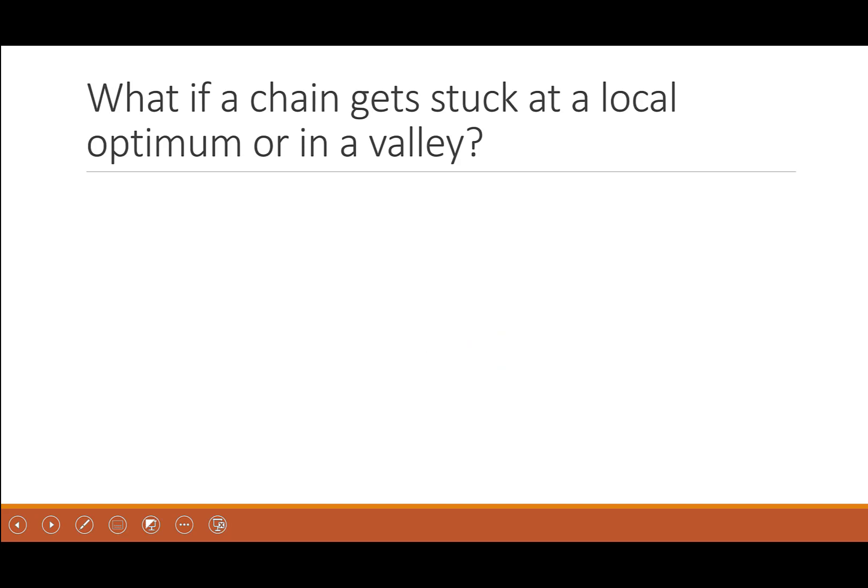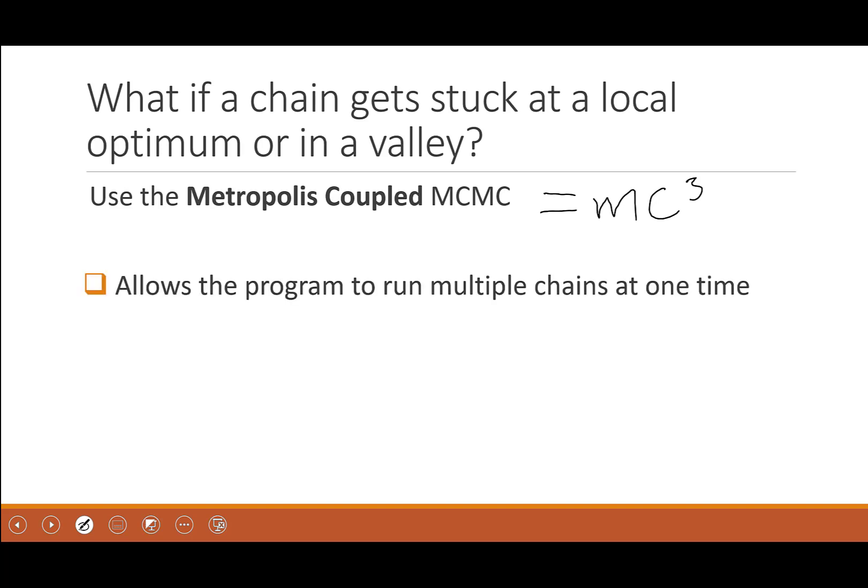So what if a chain gets stuck at a local optimum or in a valley and you can't seem to move up and you can't seem to move down to get to a global optimum? We're going to attempt something new then. And this is called the metropolis coupled MCMC, which is oftentimes called MC cubed. And what this lets you do is it allows the program to run multiple chains at one time. So instead of just running one chain, you can run multiple. But this isn't quite what you might think. The chains themselves are running around or searching for trees in a landscape that looks a little bit different. So here is what we're going to talk about. And I want you to take good notes on this. Really ask yourself whether you understand this and we will talk about it as a group.